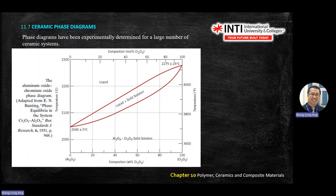Now we go into phase diagrams. The first one is temperature versus Al₂O₃ (aluminium oxide) and Cr₂O₃ (chromium oxide). This is quite straightforward — similar to an early phase diagram with liquid, solid, and a middle region. At a certain percentage and temperature, you can draw the liquidus-solidus diagram and apply the lever rule to calculate how much liquid and how much solid exist at a particular temperature.